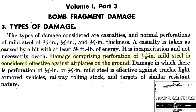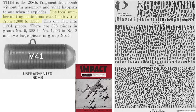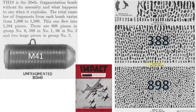This chart from a June 1943 Assistant Chief of Air Staff Intelligence report titled Impact describes the distribution of fragment numbers and weights from the detonation of a single M41 fragmentation bomb. The total number of bomb fragments will vary from 1,000 to 1,500. Of 1,384 fragment sizes measured: 898 fragments weighed between 0 and 75 grains (a .22 caliber long rifle bullet is 40 grains), 388 between 75 and 150 grains, 96 between 150 and 750 grains, and two fragments were between 750 and 2,500 grains.